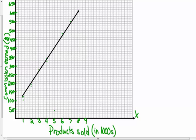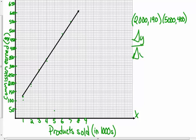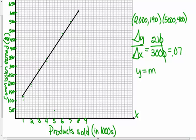So write an equation — find an equation for the line of best fit. Choose two points. I'm going to choose the points (2000, 190) and (5000, 400) that are on my line of best fit. Delta Y over delta X — don't forget that — we're finding our slope. So 400 minus 190 is 210, and 5000 minus 2000 is 3000. 210 and 3000 have a relationship of 7, so my slope is 7 hundredths.